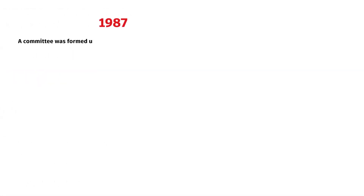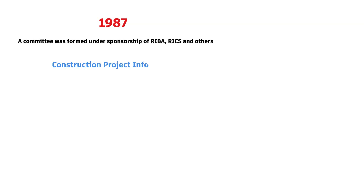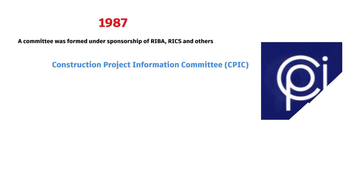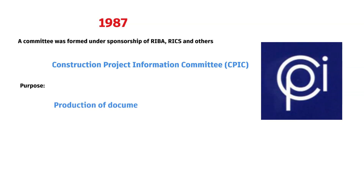In 1987, the UK committee was formed under the sponsorship of RIBA, BORICS, and others — the Construction Project Information Committee, CPIC. It was initiated to produce documents that can regulate the construction industry and minimize the chaos.